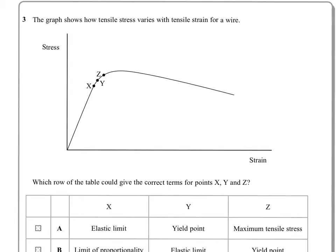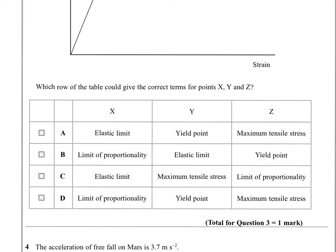Question 3. The graph shows how tensile stress varies with tensile strain for a wire, and you've shown these X, Y, and Z locations on the graph. Which row of the table could give the correct terms for the points X, Y, and Z? Well, X is where it stops being proportional. Y will be your elastic limit, and then Z will be your yield point. So we're looking at proportionality, elastic limit, followed by yield point. So let's have a look. Proportionality, elastic limit, yield point is B.